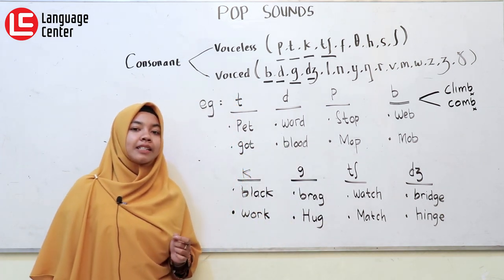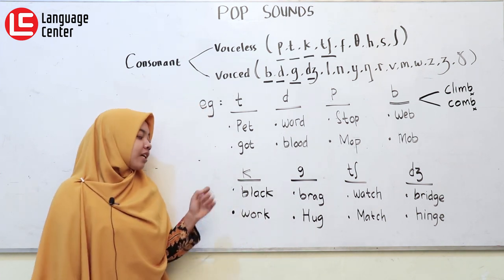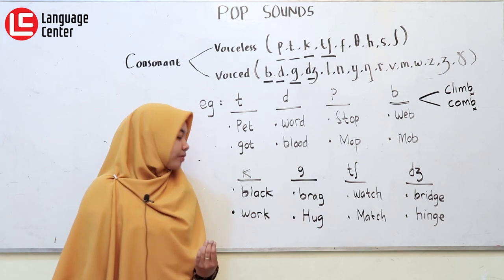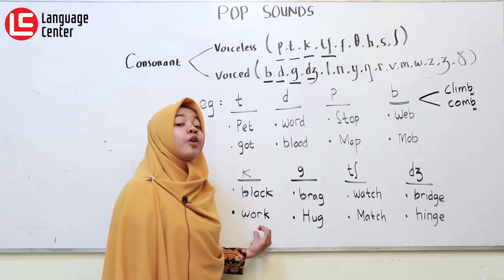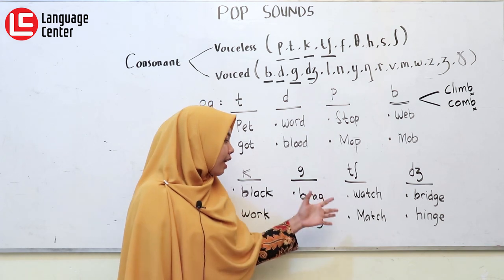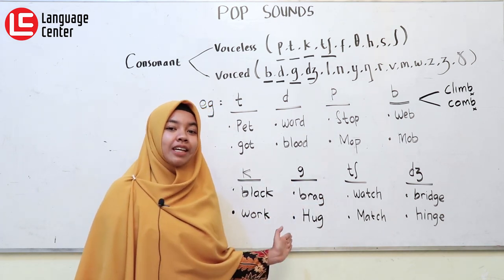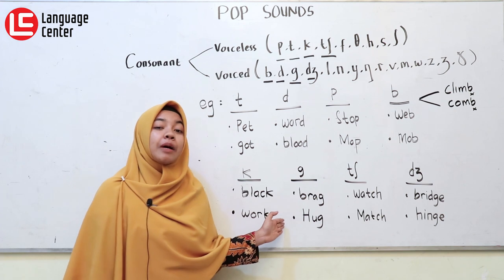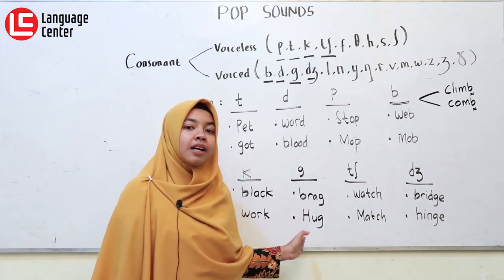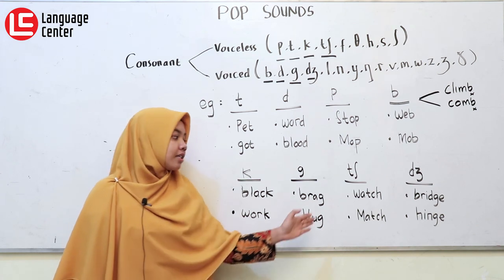Ada suara K di akhir kata. Contohnya ada 'black', 'black'. Kemudian 'work', 'work'. Next, ada suara G. It's gonna be 'brag', 'brag'. And 'hug', 'hug'.